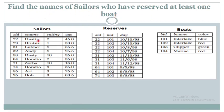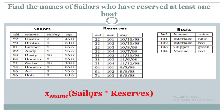Find the names of sailors who have reserved at least one boat. This is a simple question. In the Reserves table we have a column called Sailor ID, so this information gives those sailors who have at least reserved one boat. I can just join Sailors and Reserves and retrieve the Sailor Name. The information about all sailors who have reserved the boat is available in the Reserves table, and if I want their name I need to perform a natural join with Sailors and retrieve the name using a Pi operation. The final resultant relation is the names of the sailors who have reserved at least one boat.